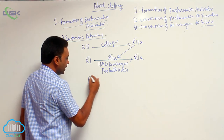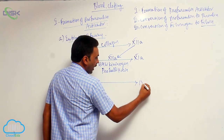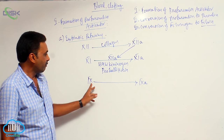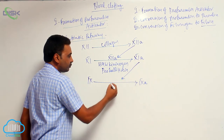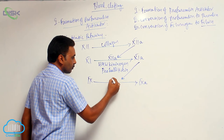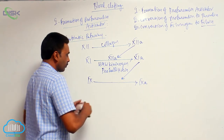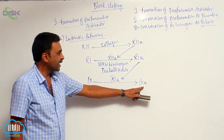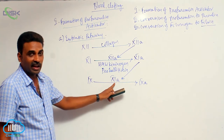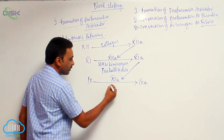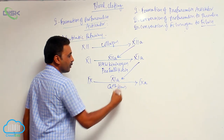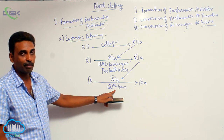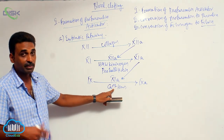The third step is activation of factor number 9. Factor number 9 is activated in the presence of activated factor number 11 and calcium ions. Wherever we come across calcium ions, it refers to factor number 4 — meaning calcium ions of plasma.